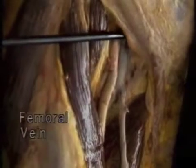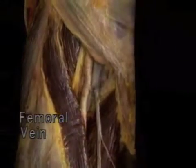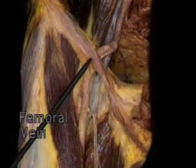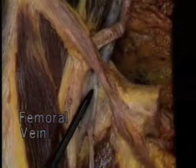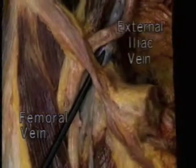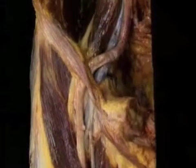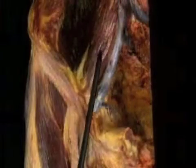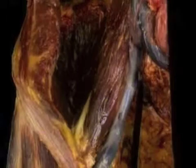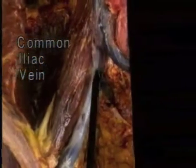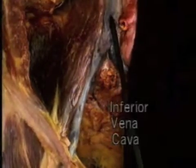The femoral vein passes beneath the inguinal ligament. To see where it goes, we'll remove the abdominal wall, leaving just the inguinal ligament. This is the inguinal ligament; this is the top of the pubis. Here the vein is called the femoral vein; here, above the inguinal ligament, it's the external iliac vein — it's all the same vessel. To see where it goes, we'll remove the artery. This muscle is the psoas major. The external iliac vein is joined by the internal iliac vein to form the common iliac vein. The right and left common iliac veins join in the midline to form the inferior vena cava.